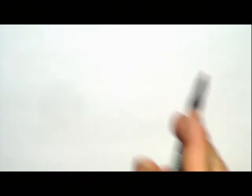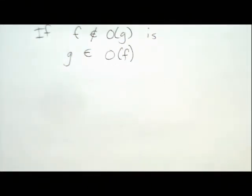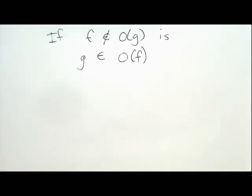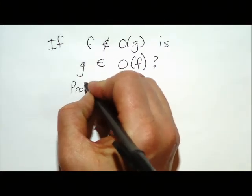A question came up about whether Big O can always be found. For most functions you'll have for running times of algorithms, probably yes. I'll say probably yes for the functions I give you on tests, but for things like sine functions that go back to zero, it gets trickier.